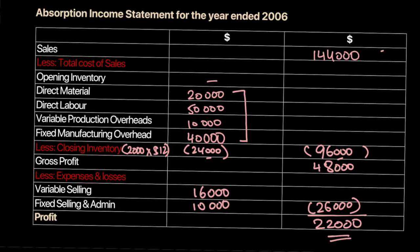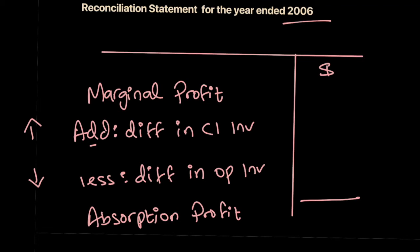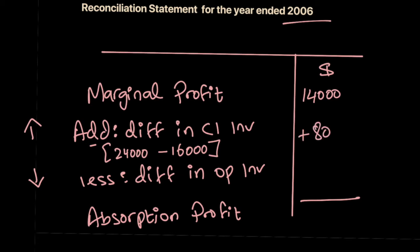Looking at the absorption income statement: the profit under absorption was $22,000. Opening inventory is zero, but the absorption closing inventory is $24,000 — greater than the marginal closing inventory because it includes fixed production overhead. In the reconciliation statement: start with marginal profit of $14,000, add the closing inventory difference of $8,000 (absorption $24,000 minus marginal $16,000), and with no opening inventory difference, you arrive at the absorption profit of $22,000.